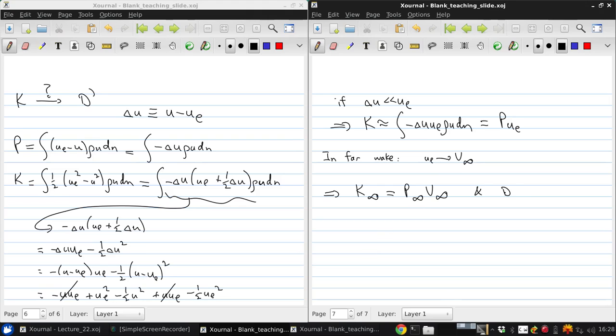And since the drag per unit span is just the far field momentum defect, then what we get is that the drag times V infinity is equal to K infinity, which is the integral over the airfoil plus the wake of the dissipation integral D.